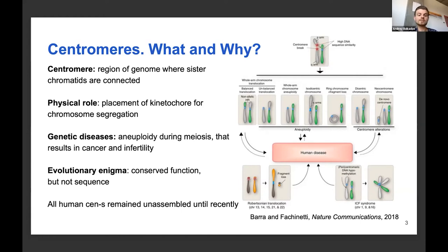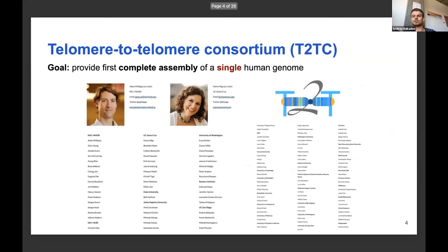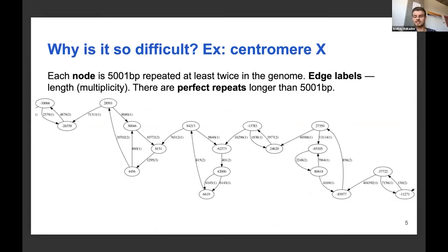Interestingly, despite their conserved function in chromosome segregation, centromere sequences are not conserved at all, and until recently no human centromeres had been assembled. The Telomere-to-Telomere consortium is a multi-university initiative that aims to provide the first complete assembly of a single human genome. We joined the consortium to work on the centromeres as part of that effort.